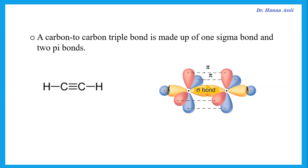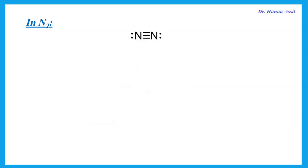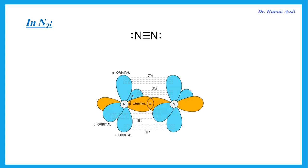If we have a triple bond — this molecule, which is called ethyne, has a triple bond between the two carbons — any triple bond is made up of one sigma and two pi bonds. For example, in HCN, there is a triple bond between the carbon and the nitrogen, and a single bond between the carbon and the hydrogen — that's a sigma. The triple bond between carbon and nitrogen is one sigma and two pi bonds. Nitrogen also has a triple bond, so again we have one sigma and two pi bonds.